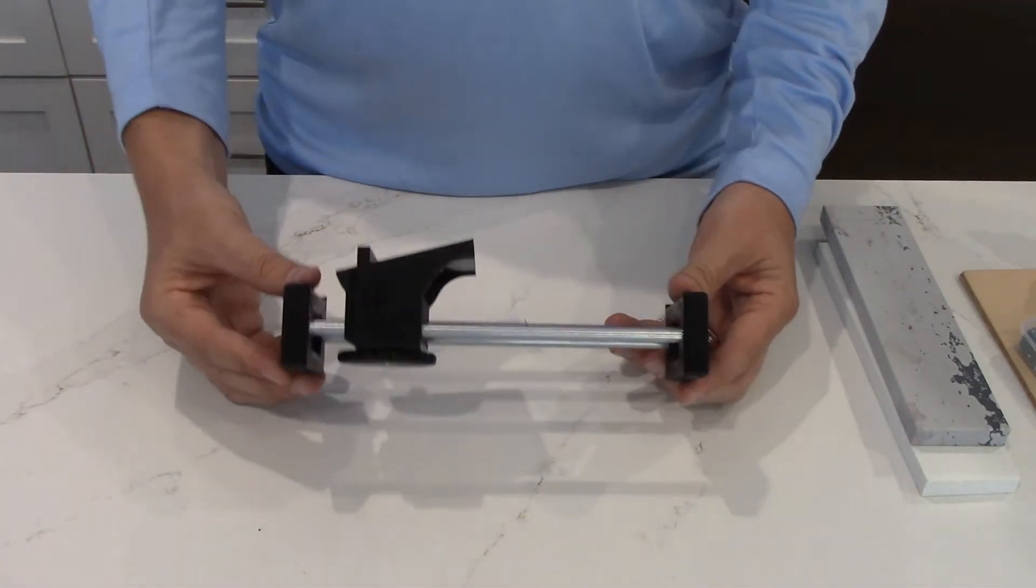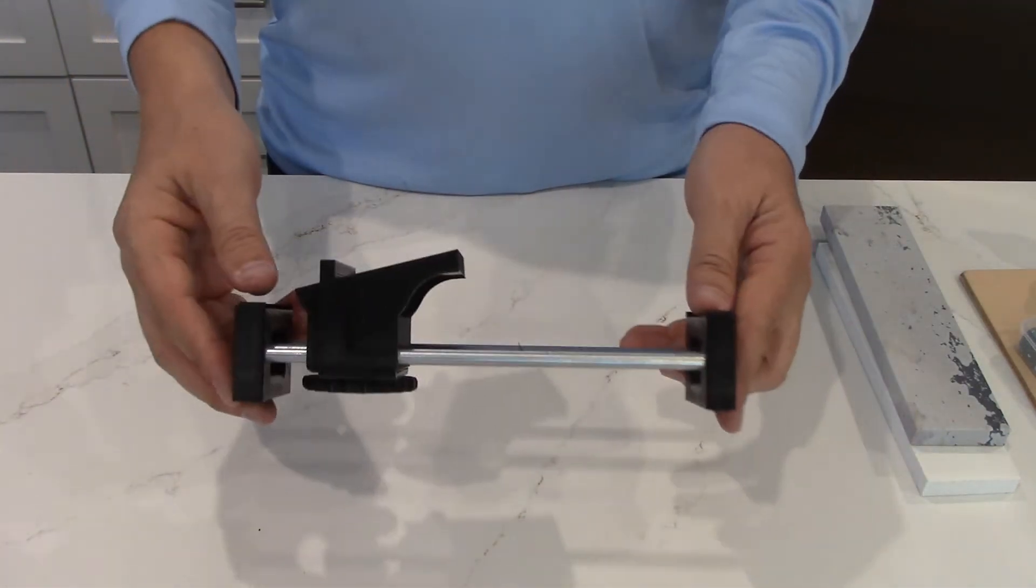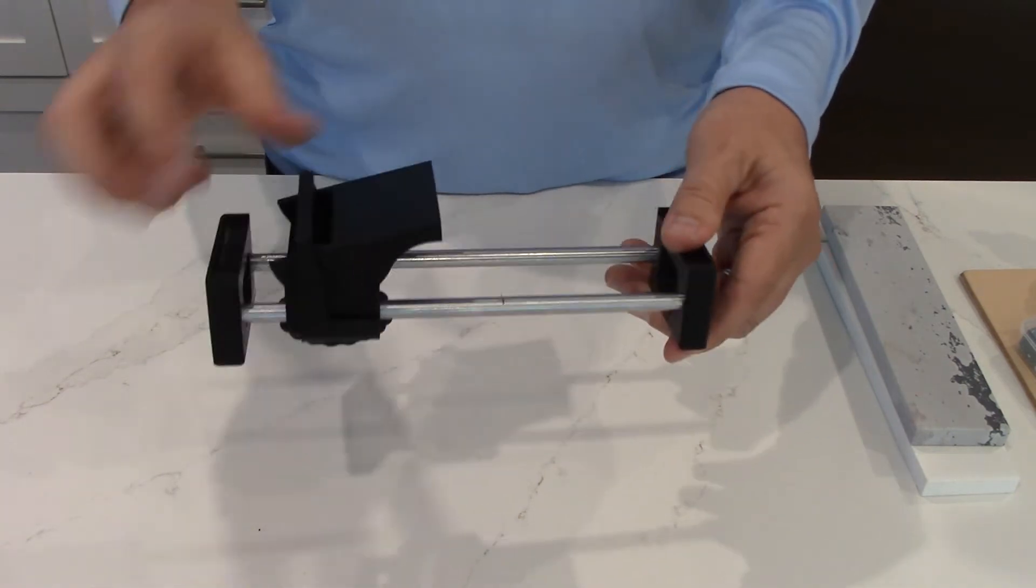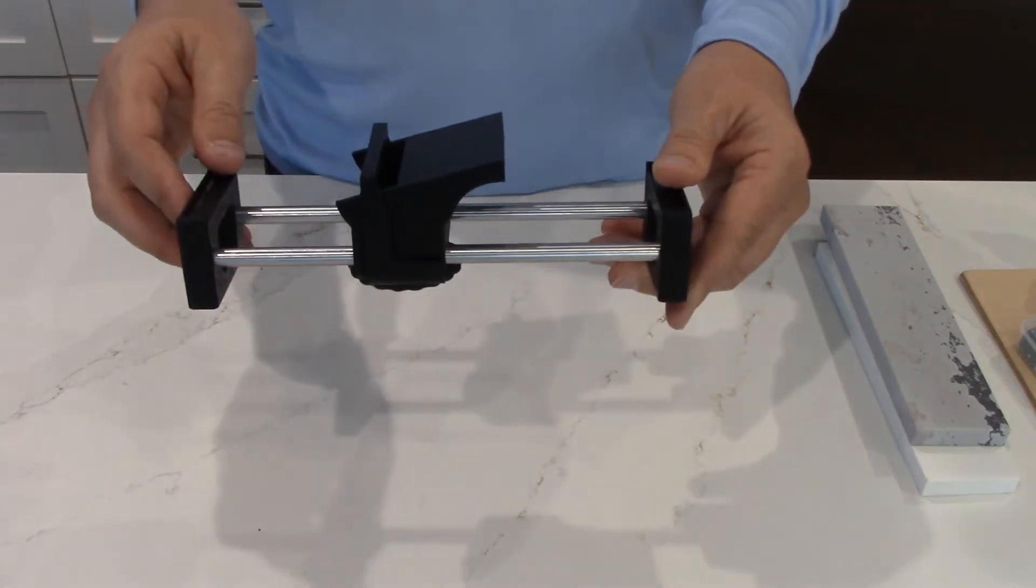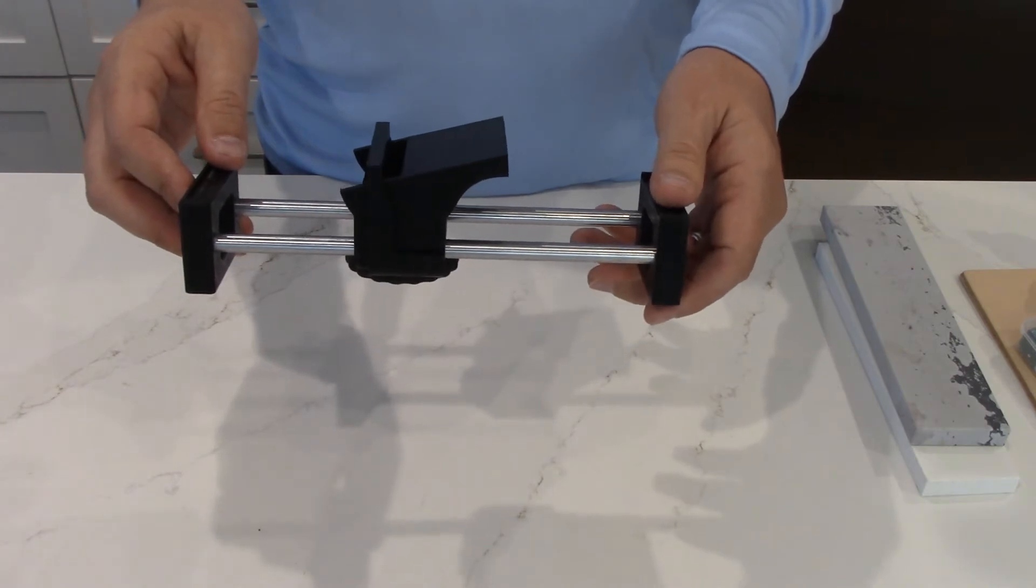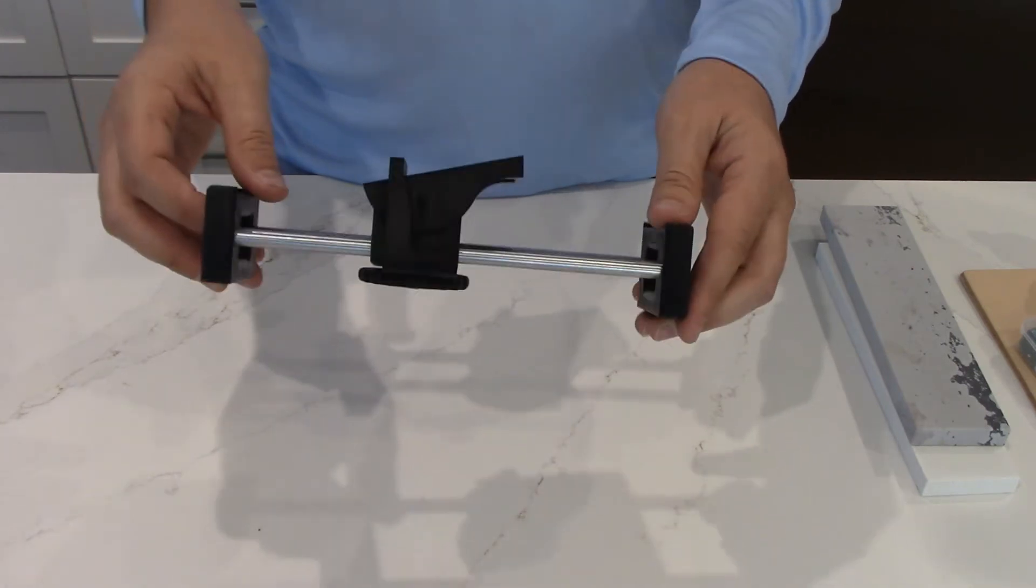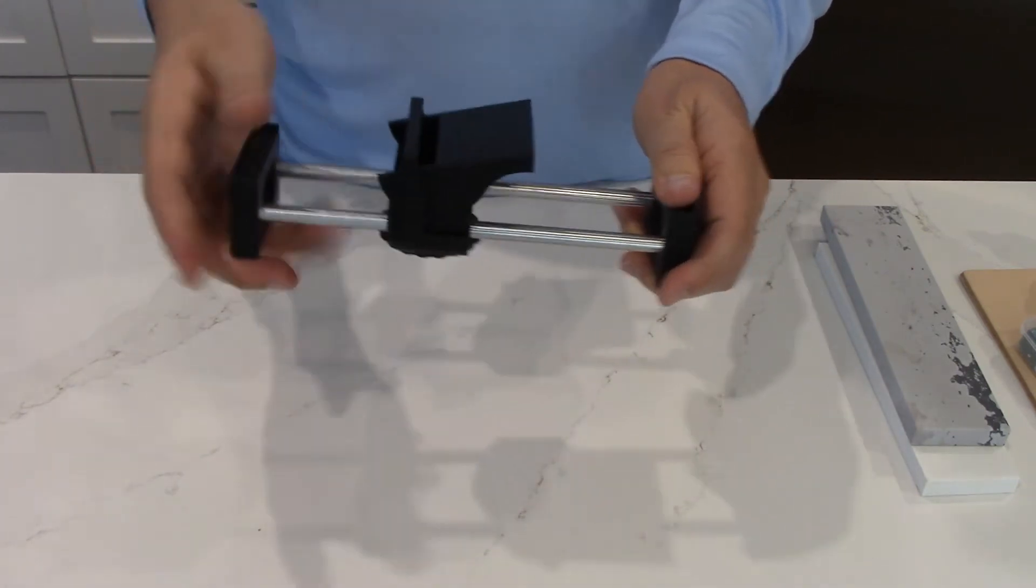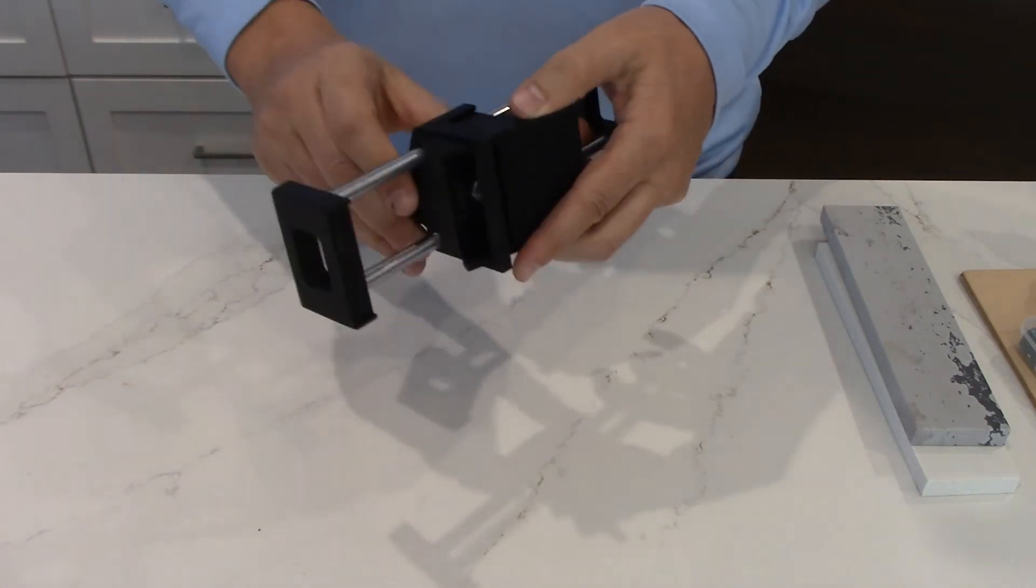And then here's the sharpener, the fixture. It comes with a moving slide. There's a couple components on here that I think are important to notice. One is the angle is adjustable from 10 to 40 degrees.